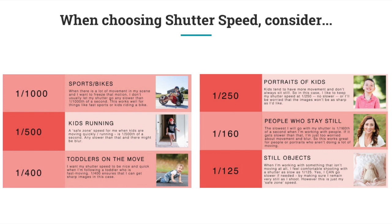If you're unsure what shutter speed to use, here's a guide I follow when photographing kids or people who are moving. For someone riding a bike or doing sports, I use at least 1/1000th of a second and adjust ISO and aperture accordingly. For kids who are running, I shoot at least 1/500th of a second. For toddlers on the move, I use 1/400th of a second or faster. For general portraits of kids, I go no lower than 1/250th of a second. For people who stay still, the minimum I'd use is 1/160th of a second.